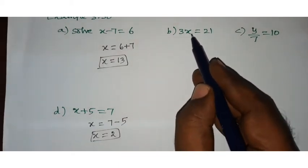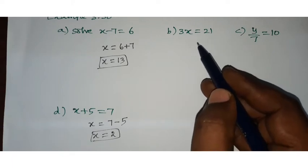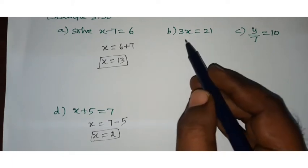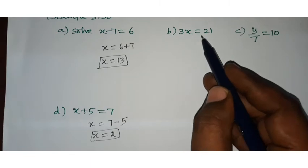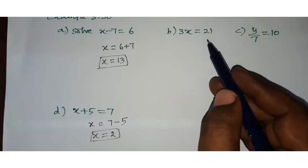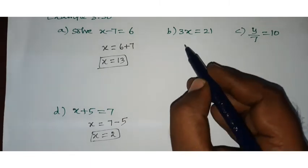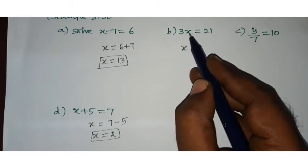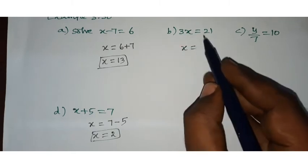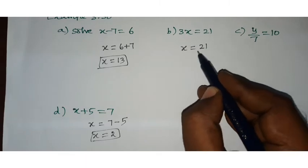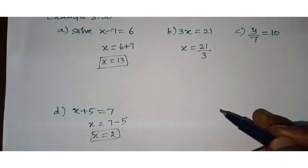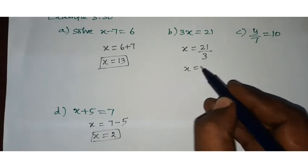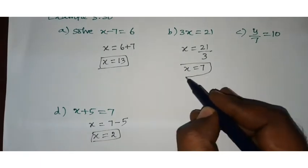Third example: 3 into x equals 21. In place of x, what should come? 3 sevens are 21. The 3 is multiplying with x, so it goes to the other side as division. x equals 21 divided by 3, therefore x equals 7.